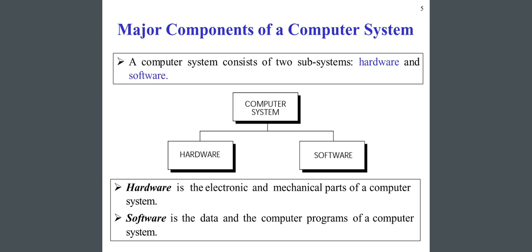The major components of a computer system: generally, a computer system consists of two subsystems — hardware and software. Hardware is the electronic and mechanical parts of a computer system, and software is the data and the computer programs of a computer system.